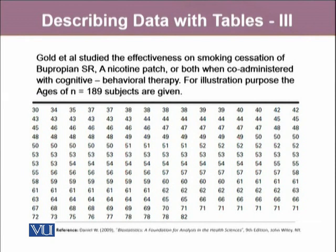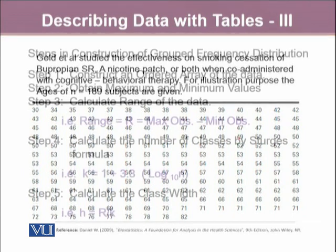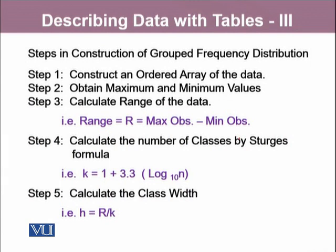Let's take a dataset where Gould et al. studied the effectiveness on smoking cessation of different methods. For illustration, they proposed the ages of 189 subjects given in a table. The very first step to construct the frequency distribution for such a large dataset is to construct an ordered array, then obtain the maximum and minimum values. The third step is to obtain the range, which is the difference of the maximum observation and minimum observation.